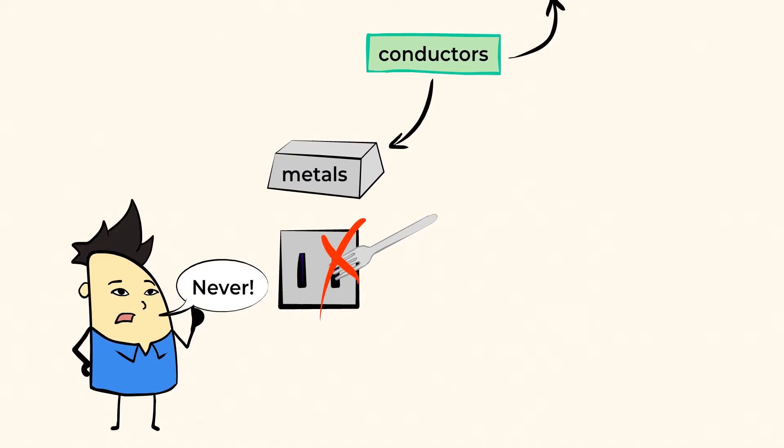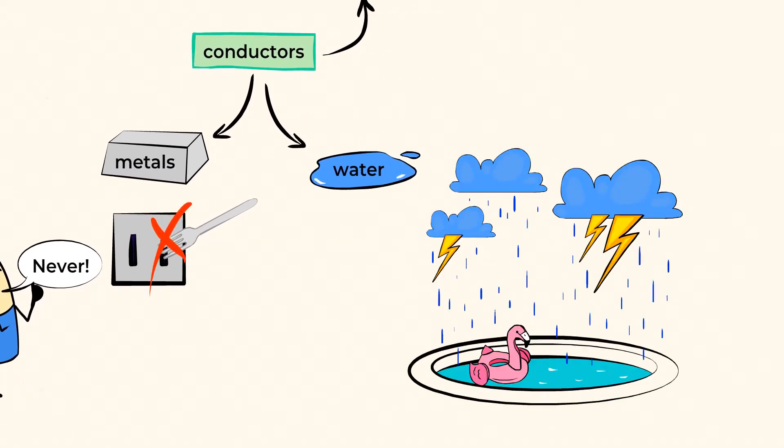Electricity can also flow through other things, like water, for example. That's why if there's ever a thunderstorm and lightning, everybody has to get out of the pool. The water can conduct electricity, and if lightning strikes the water, everybody would get shocked.